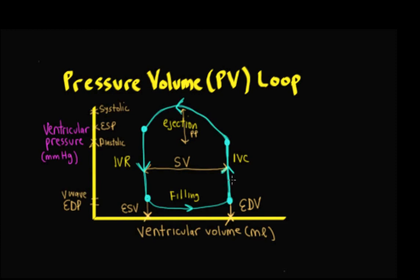The difference between the end diastolic volume and the minimum volume — the end systolic volume — is the stroke volume.